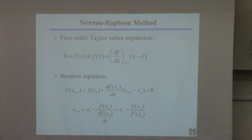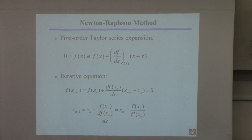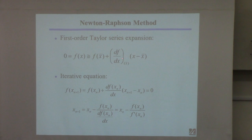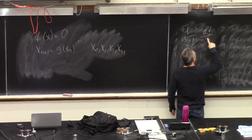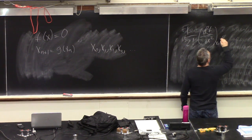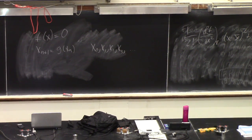To derive Newton-Raphson, consider a Taylor series expansion. We want to solve f(x) = 0, and we do a Taylor series expansion of f about the point x̄. The expansion is: f(x̄) plus the first derivative of f evaluated at x̄ times (x − x̄), plus higher-order terms involving the second derivative and (x − x̄)². We neglect the second-order and higher terms — that's why we have an approximation.